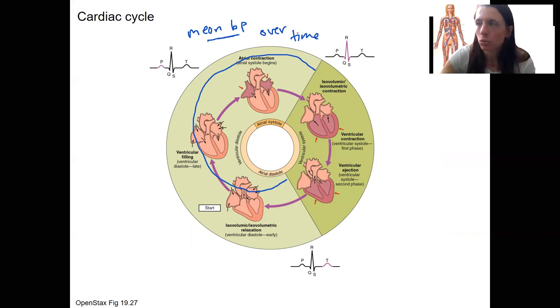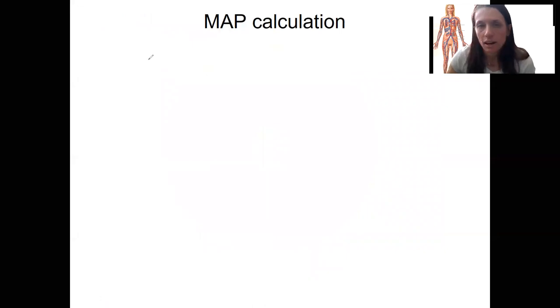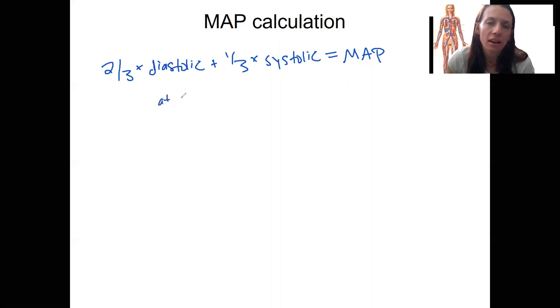So when we go to calculate this, this mean pressure, the calculation is actually going to be two-thirds times diastolic plus one-third times systolic. This equals mean arterial blood pressure. You may also see this. And so before I go on, that's because the heart spends about two-thirds of the time in diastolic at rest, two-thirds of time.